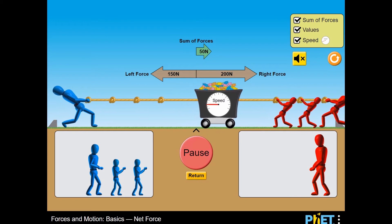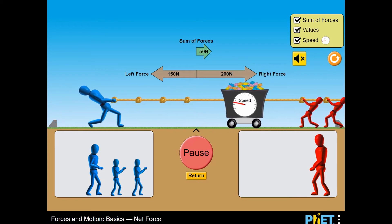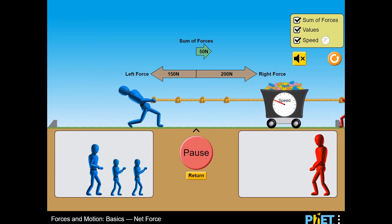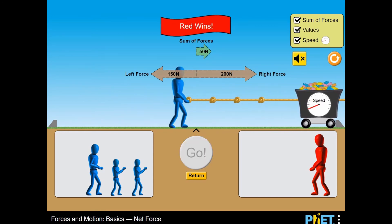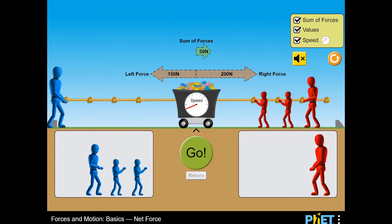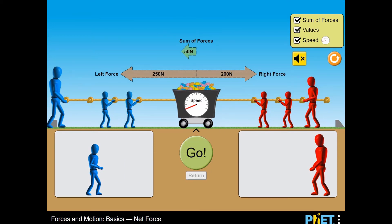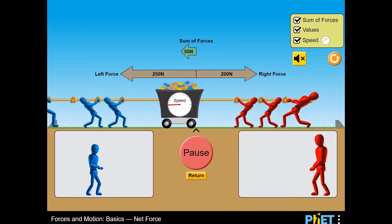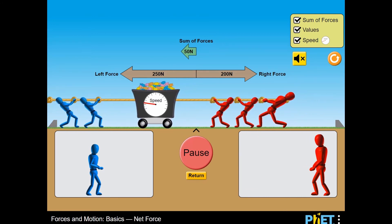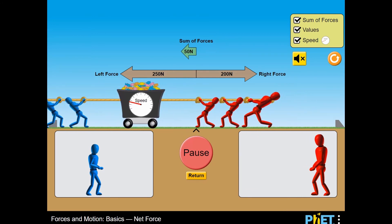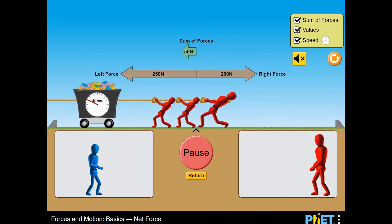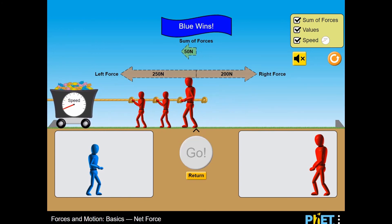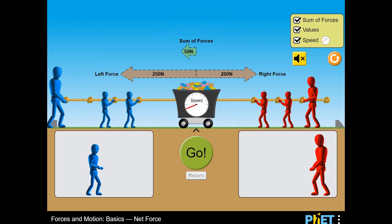There are two teams competing in the tug-of-war: red men for the red team and blue men for the blue team. Once you've placed men in the tug-of-war, click on the go button and observe which team wins. You can click on the sum of the forces values and speed buttons to observe their readings as you progress. Use the mouse to click to select different men for the tug-of-war, and to click buttons to activate the simulation or to read information.